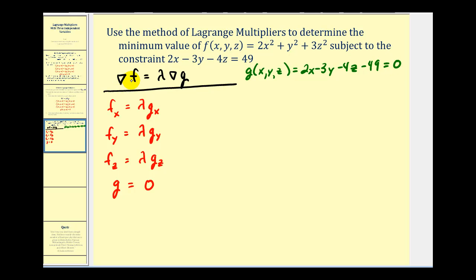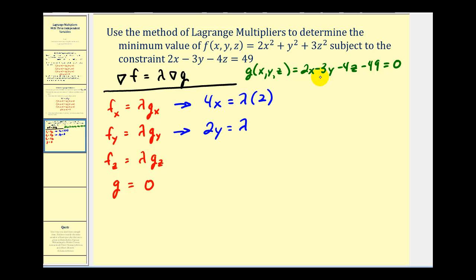So now we'll set the gradient of f equal to lambda times the gradient of g. That'll give us these first three equations. The partial derivative of f with respect to x is going to give us four x, equals lambda times the partial of g with respect to x, that would be two. The second equation will be the partial with respect to y: the partial of f with respect to y would be two y, equals lambda times the partial of g with respect to y, that's going to be negative three. And then the partial of f with respect to z, that'll be six z, equals lambda times the partial of g with respect to z, that'll be negative four.